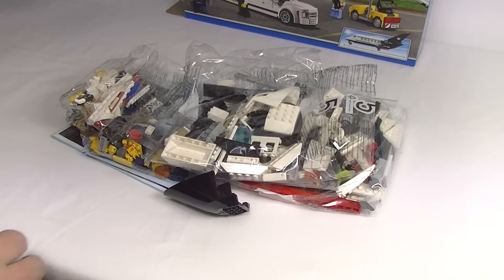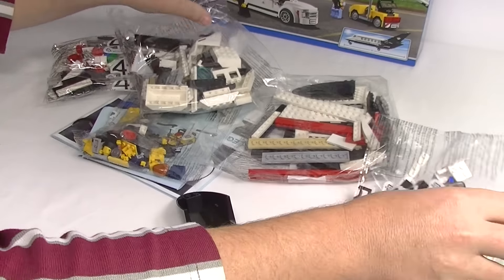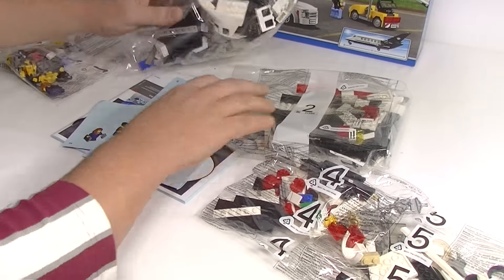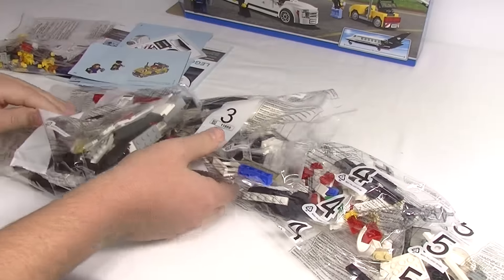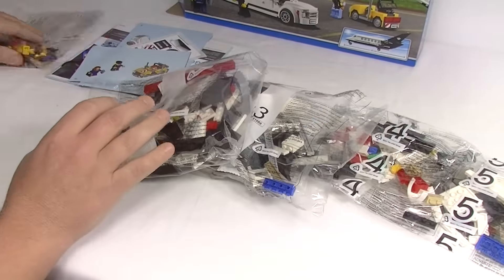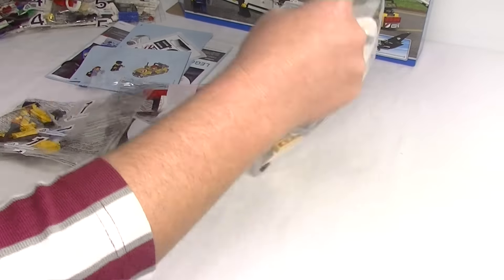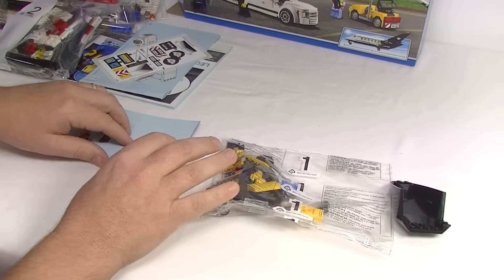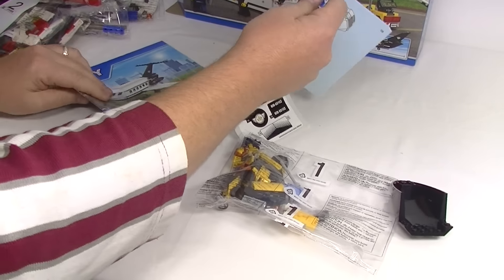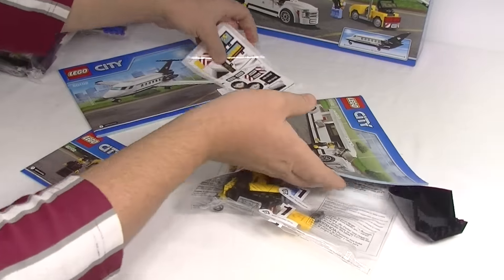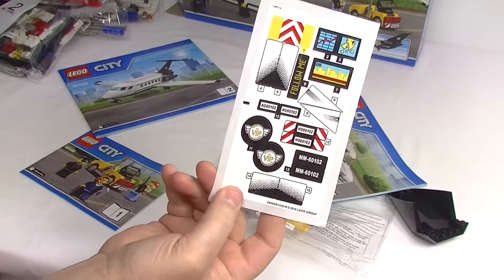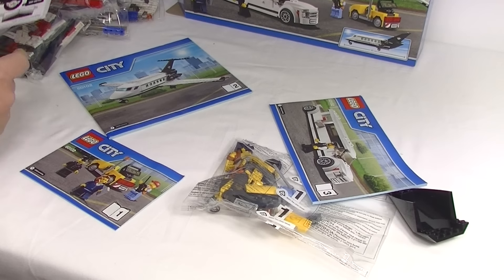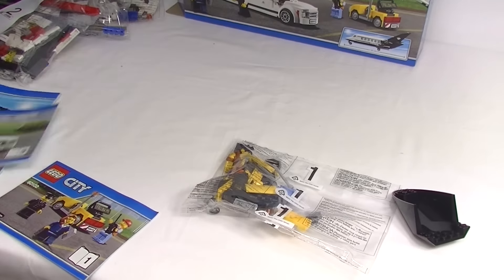Get the box out of the way. We've got five bags. Let's lay them all out here. We get this piece loose in the box, three instruction books, and one fairly large sticker sheet. Got the trusty tools here as well. All set to rock and roll, let's get into it starting with bag one.